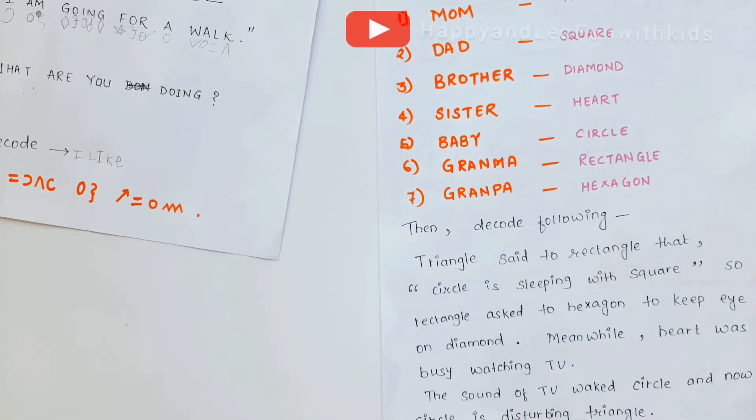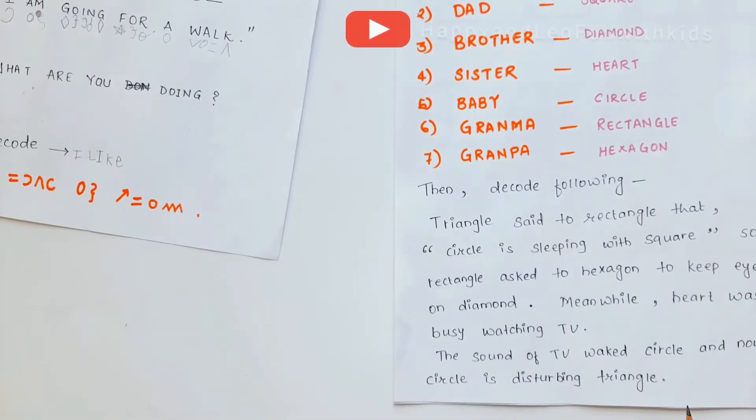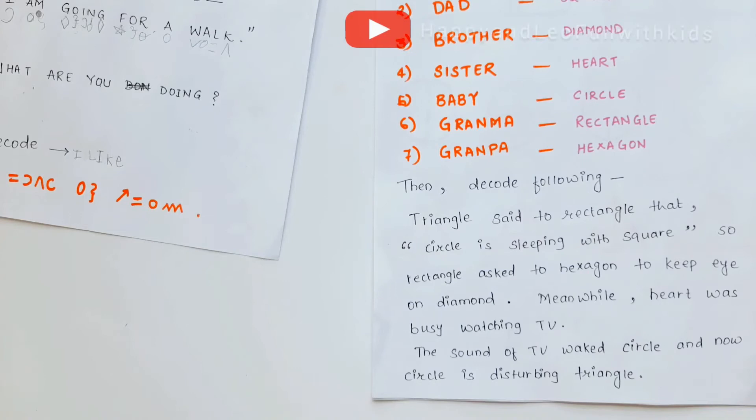Now I'm going to tell you what the shapes are. Mom said to grandma that baby is sleeping with dad. So grandma asked grandpa to keep an eye on brother. Meanwhile, sister was busy watching TV. The sound of the TV woke baby and now baby is troubling mom. Good.